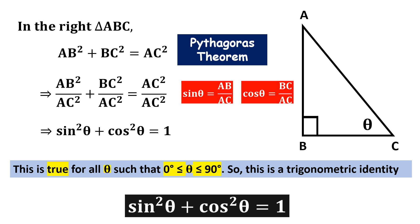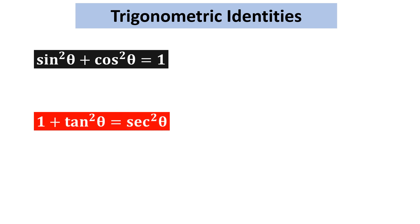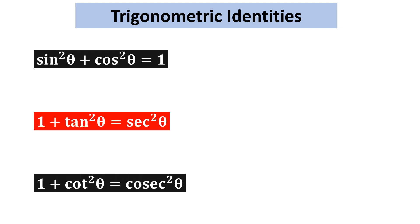In class 10 you will be learning 3 trigonometric identities. The first one we have already seen how it is proved, and the remaining two you can prove in a similar fashion. The second one is 1 + tan²θ = sec²θ, and the third is 1 + cot²θ = cosec²θ.